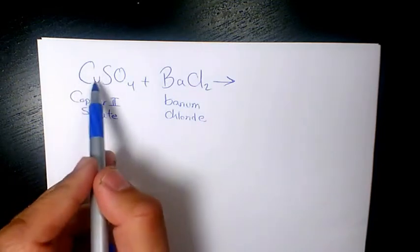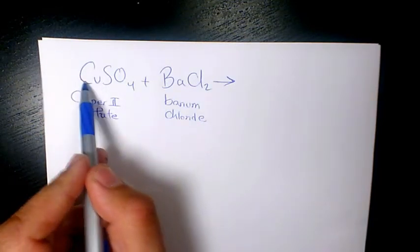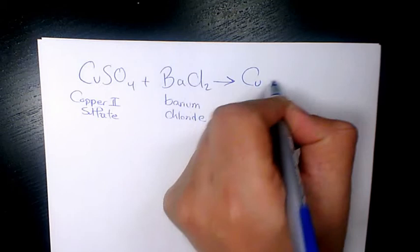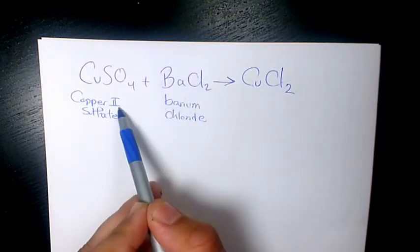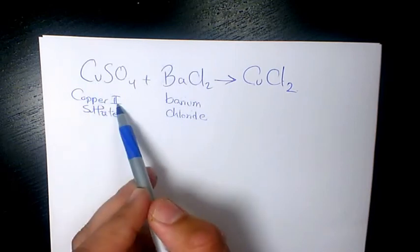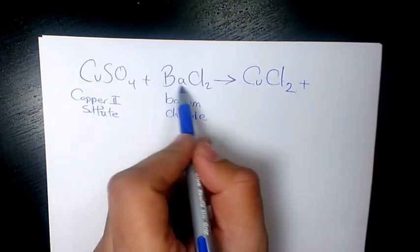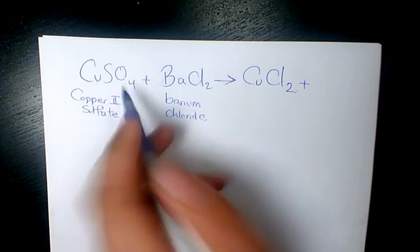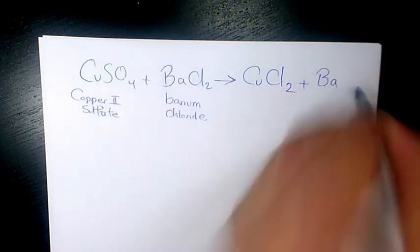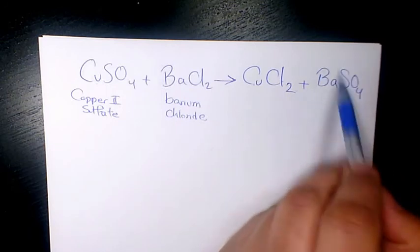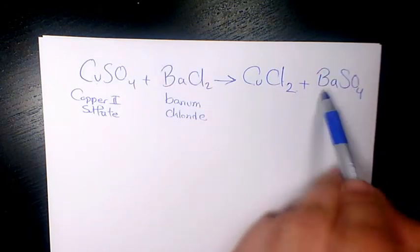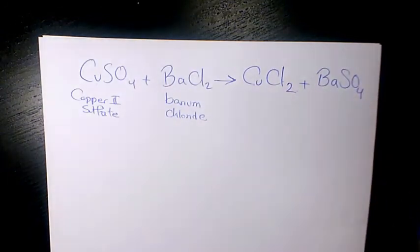So we're going to have CuCl2. Why Cl2? Because the charge for Cu is 2, the oxidation state 2 for the ion. And here we have BaSO4. Ba is 2, SO4 is negative 2, so we don't write anything here. Now let's balance it.